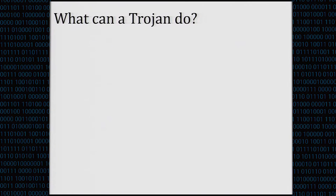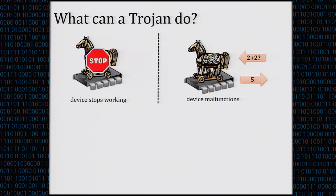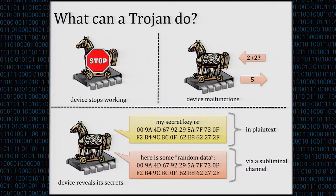When a Trojan activates, it can make the device stop working, or cause damage by malfunctioning — producing wrong outputs on some inputs. Or the device can simply leak its secret state, for example leaking its secret key to the adversary in plaintext, or via subliminal channels so the owner won't even be aware something leaked. It's a serious problem, and the natural question is what countermeasures we can have against this.